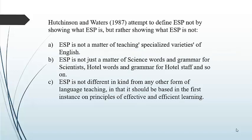Now let's move to Hutchinson and Waters. These two authors tried to define ESP not by showing what ESP is, but by showing what ESP is not. The first point they propose is that ESP is not a matter of teaching specialized varieties of English. We should not confuse ESP with a special or different form of the language. Of course, we are going to find typical features of a particular context, but these differences should not be regarded as another form of the language.